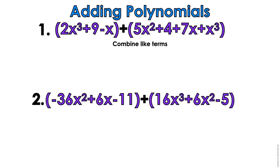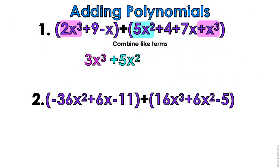Adding polynomials is all about combining your like terms, and like terms are all about the same exact variable part. I like to say same last name. So x-cubes go with x-cubes — they got the same last name, so they go together. That's going to give me 2x-cubed plus 1x-cubed is 3x-cubed. Notice that they're all color-coded for you. So you have 5x-squared — there's nobody else with his last name, so he's going to come right down.